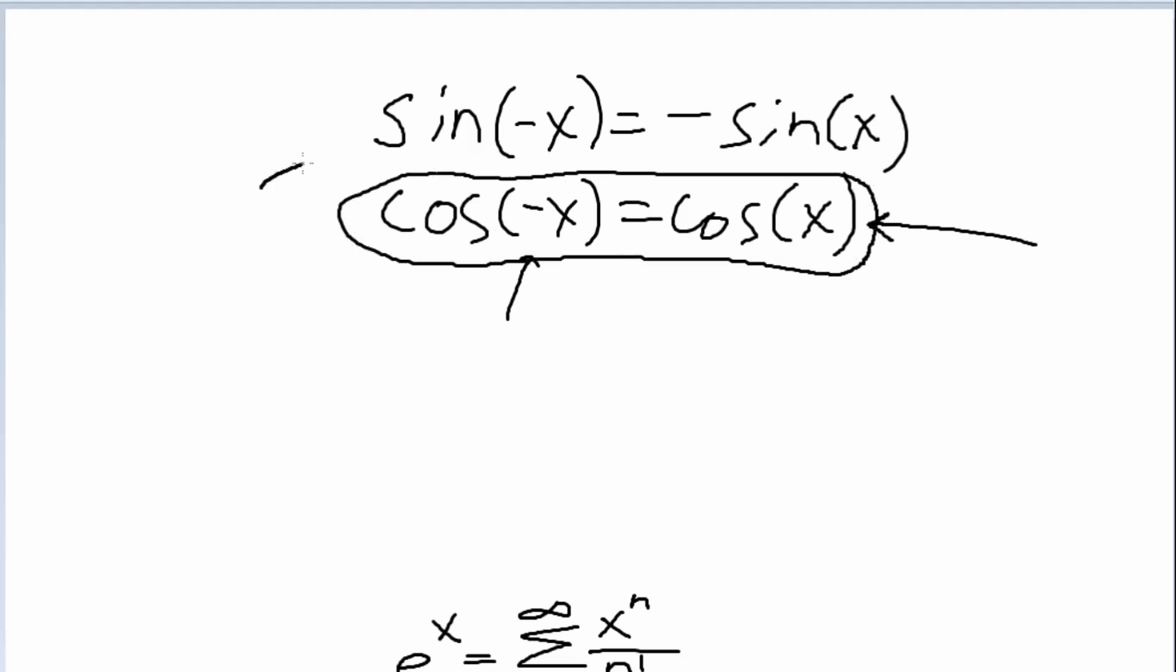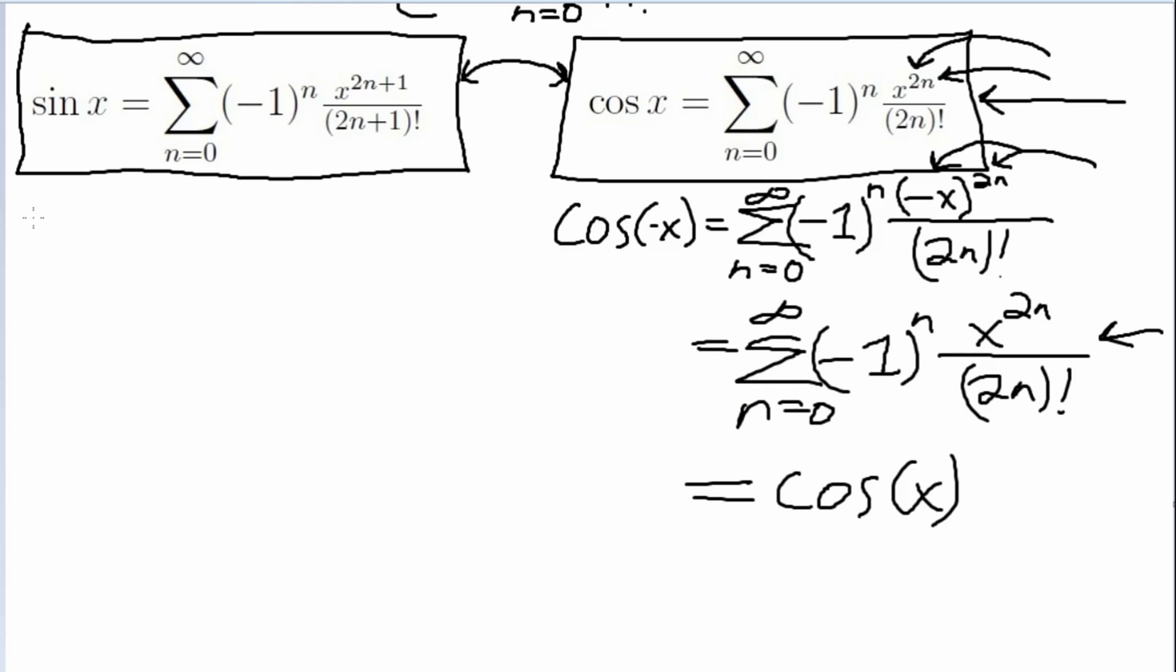So now let's move on to sine of negative x. So we can see here already that we have an exponent. x is being raised to some power, and this time it is odd, and that's going to make the difference.